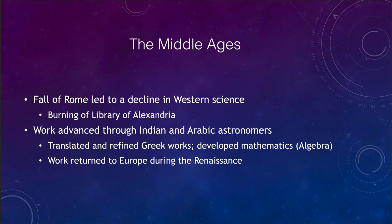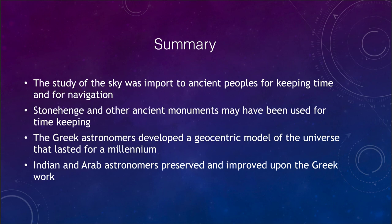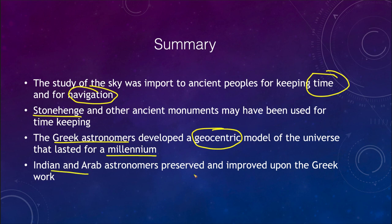So let's finish up here, as we do with our summary. And what we find is, what have we learned? Well, we looked at how the study of the sky was important for a couple of things for timekeeping, for navigation. We looked at Stonehenge as one ancient monument, but there were a lot of others around the world that did similar things, and were used for timekeeping. We looked at the Greek astronomers who gave us the geocentric model of the universe, and that was our model that explained planetary motions for over a thousand years. And finally, Indian and Arab astronomers preserved and improved upon the Greek work, which then came back to Europe with those modifications and with those improvements during the Renaissance. So that concludes our discussion of ancient astronomy. We'll be back again next time for another topic in astronomy. So until then, have a great day, everyone, and I will see you in class.